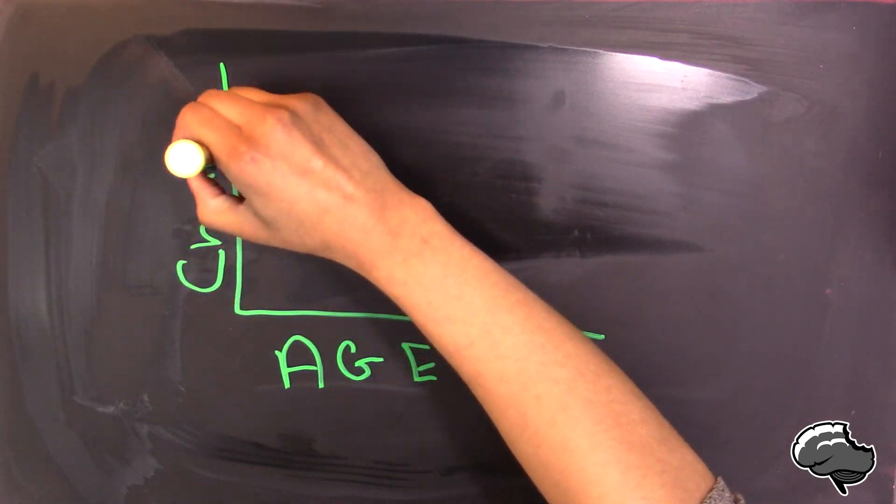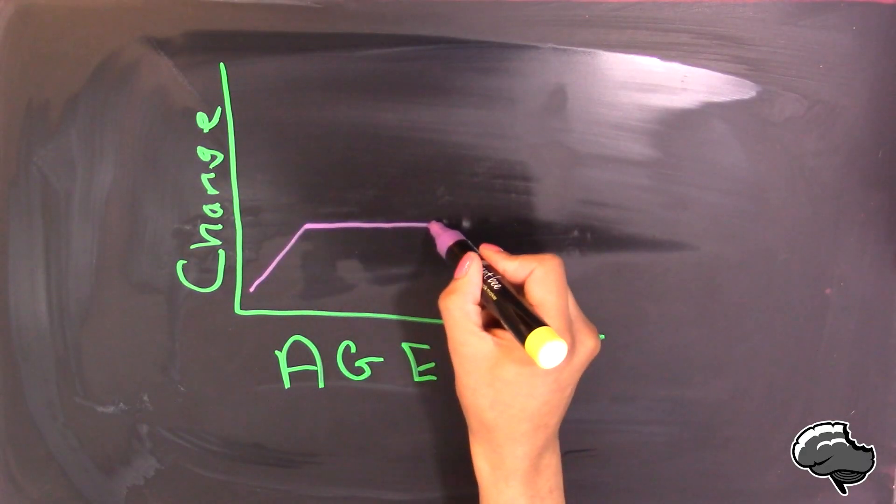As one reaches young and middle adulthood, changes that may occur in the brain seem to be less pronounced and non-linear. This means, for example, that a change may occur, followed by relative stability, followed by another change.